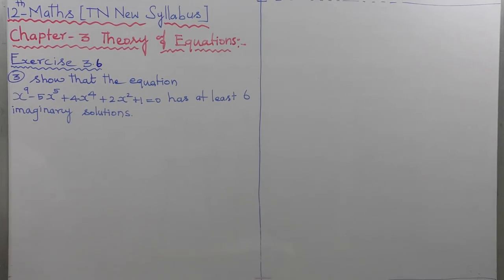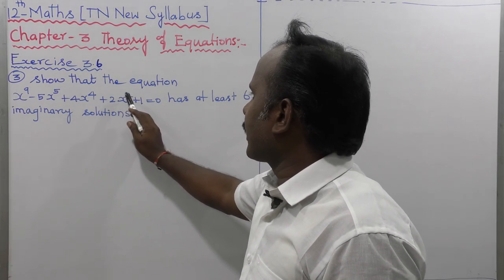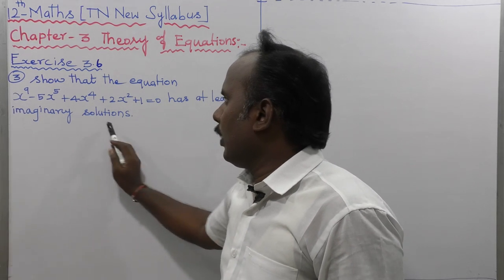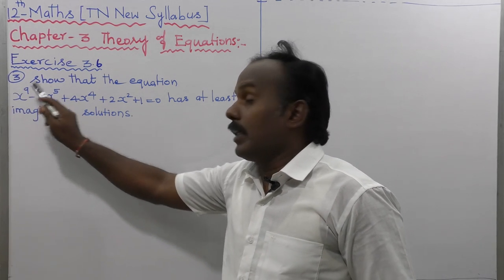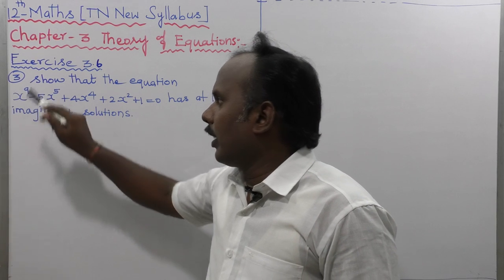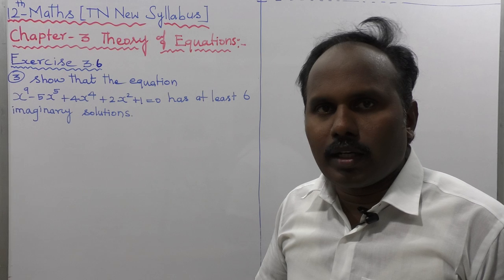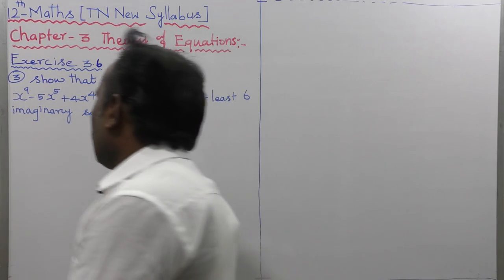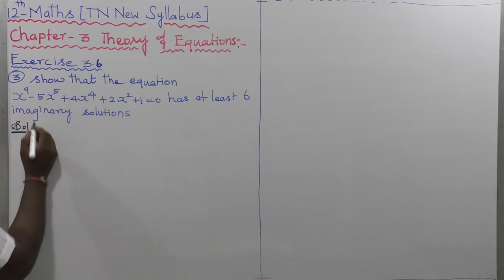Show that the equation x⁹ - 5x⁵ + 4x⁴ + 2x² + 1 = 0 has at least 6 imaginary solutions. First of all, the total number of solutions is 9. There are definite real solutions — three positive or negative — leaving six imaginary solutions.